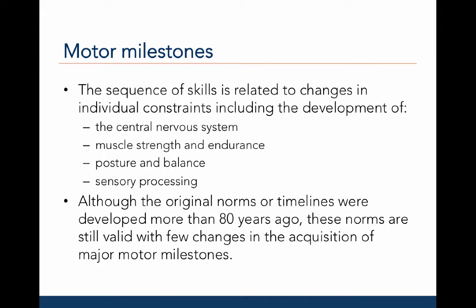The sequence of motor milestones is related to predictable changes in individual constraints, including the development of the central nervous system, muscle strength and endurance, posture and balance, and sensory processing.